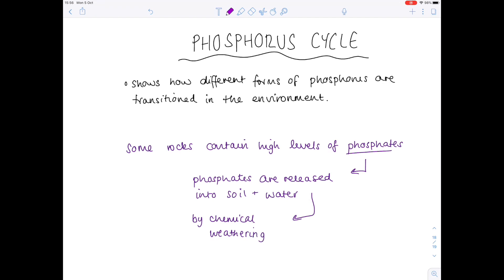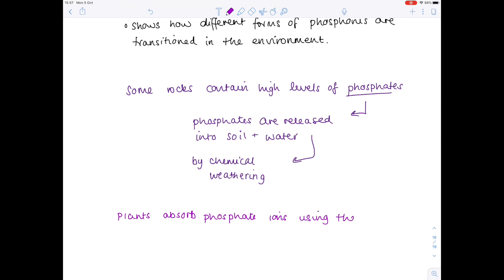Now, lots of different organisms require these phosphates, but how do they enter the food chain? Well, as always, it's with the producers, the autotrophs. It's the plants which absorb the phosphates via their root hairs from the soil. And because these phosphates are moving from an area of low concentration to high concentration, that's going to occur by active transport.